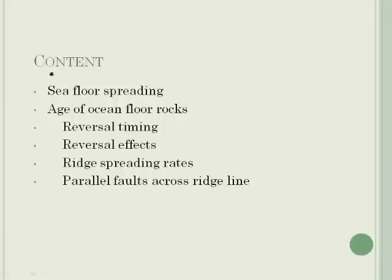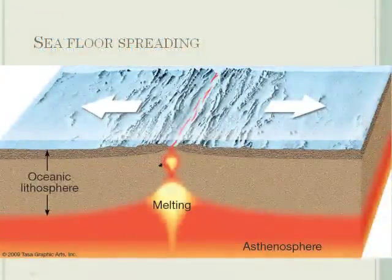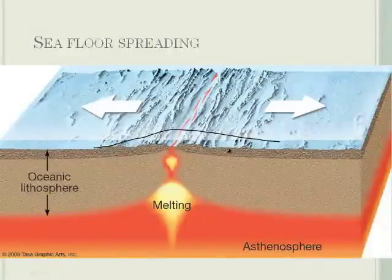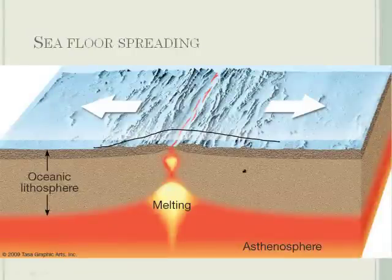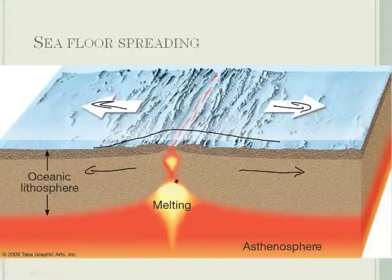Now let's talk about seafloor spreading. A number of years ago, Wegener was the scientist who believed that in the middle of the ocean there's a mountain range — particularly in the Atlantic Ocean. He thought the seafloor was spreading, meaning the plates were separating. Scientists now largely agree: there is molten magma underneath the Earth that starts to rise as these plates move apart.